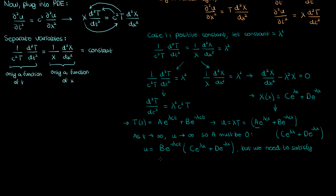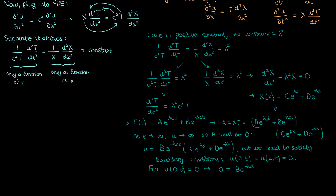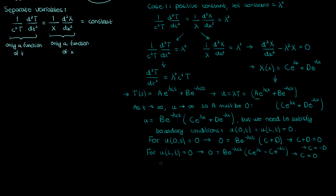But we still have to satisfy the boundary conditions: u is zero at both edges of the string. To satisfy the first boundary condition at x equals 0, you get an expression where C plus D must equal zero, so C equals negative D. Then to satisfy the second boundary condition you find that C must also equal zero, which forces both C and D to be zero. This gives a trivial solution. Since C and D must be zero to satisfy the boundary conditions, we have a trivial solution when the constant is positive — and since we can't satisfy a non-trivial initial condition with a trivial solution, we reject this option.